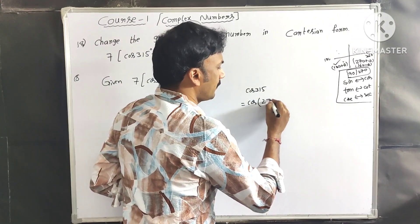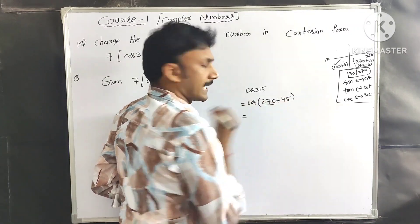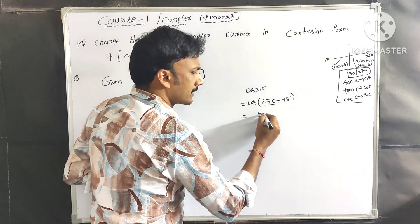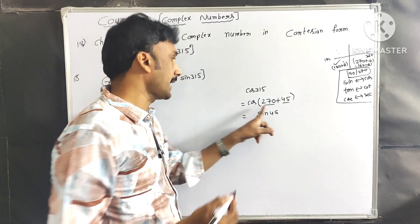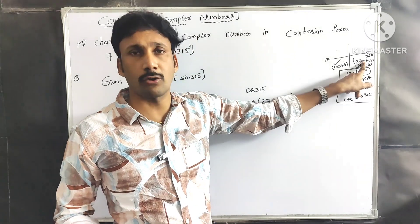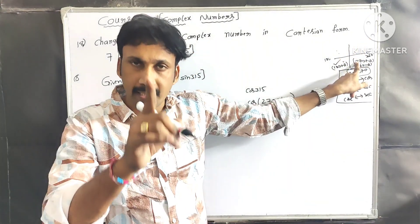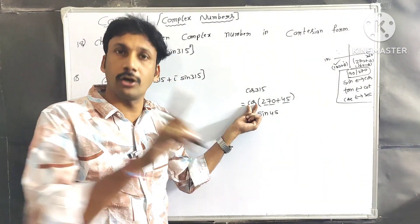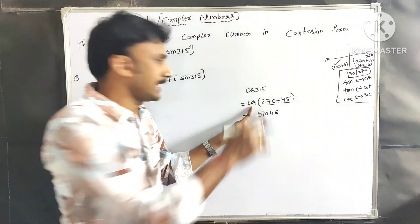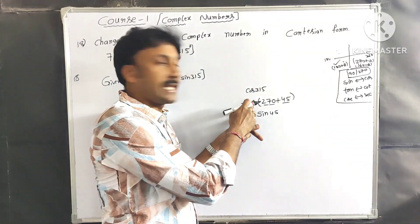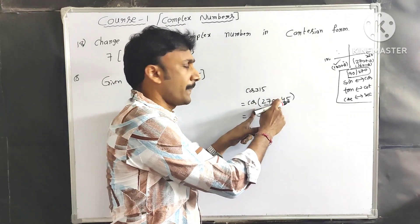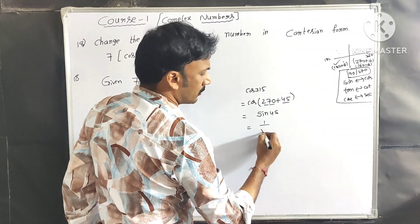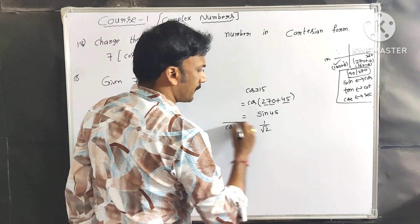We write 315° = 270° + 45°. When we have 270° + θ, sin becomes cos and cos becomes sin. 315° is in the fourth quadrant. Using ASTC, in the fourth quadrant cosine is positive. So cos315° = sin45° = 1/√2.